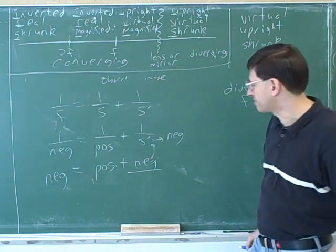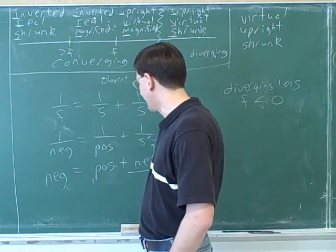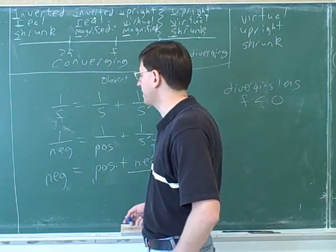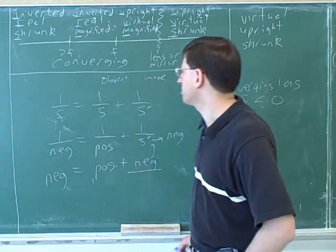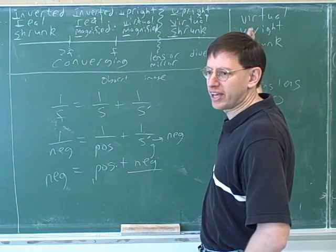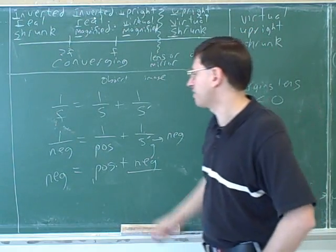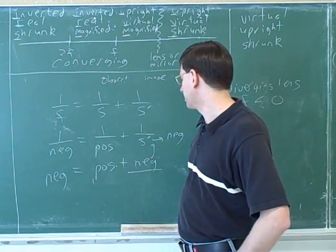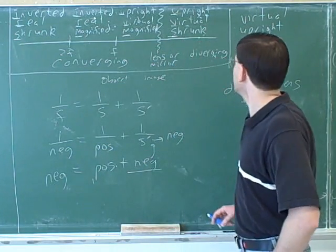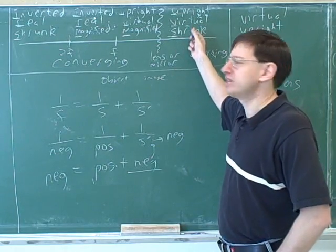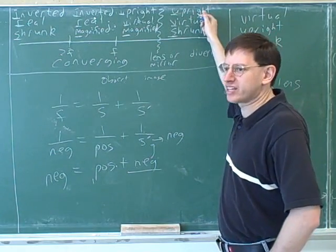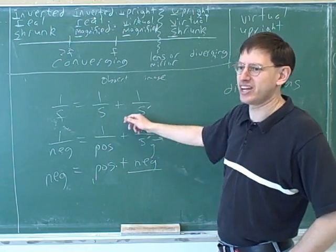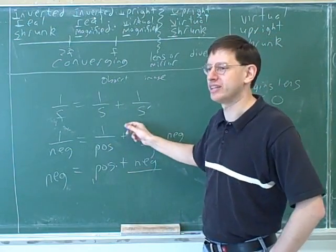We never really did a problem like this before, so it's not surprising that we have some difficulty getting through this. Here's a good technique for this type of problem: all we really care about is predicting qualitatively what the image is like. The qualitative answer comes from the signs. I can just keep writing 'negative' and 'positive' in here and working through that. This is the proof that the chart is right. We just proved that a diverging device has to give you a virtual image, and it's convenient that we don't usually have to go through all this to get there, but you might be required to actually show it.